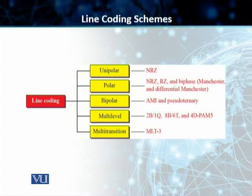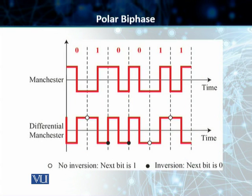We have discussed unipolar NRZ and we have discussed polar NRZ and RZ. We are going to talk about the biphase schemes, which include Manchester and differential Manchester. We have seen different disadvantages of both non-return to zero and return to zero polar schemes, and now we are going to talk about polar biphase. There are two variants of polar biphase schemes, the first one being Manchester.